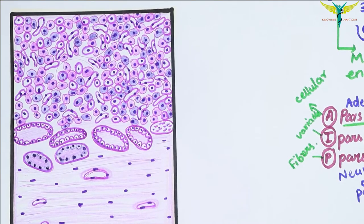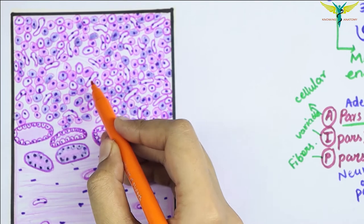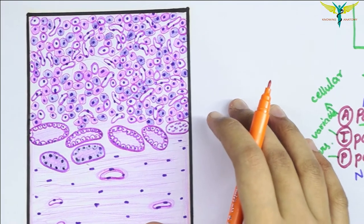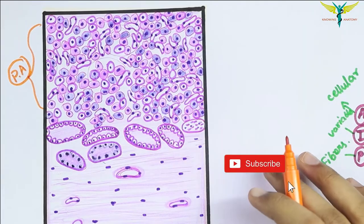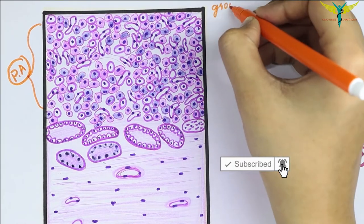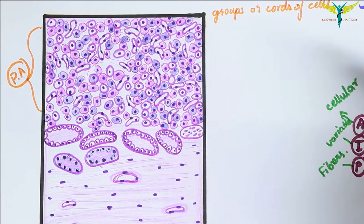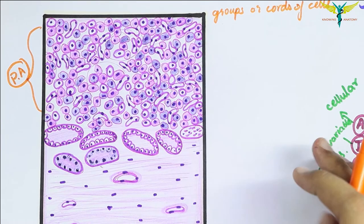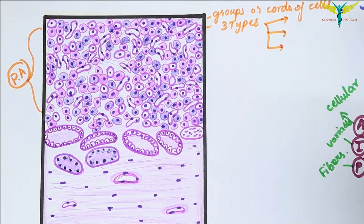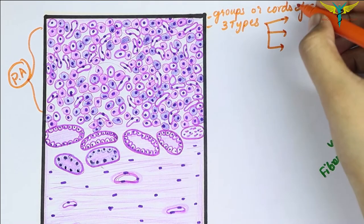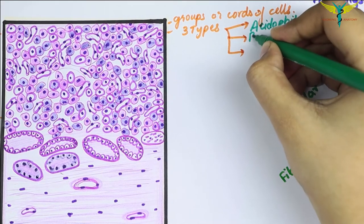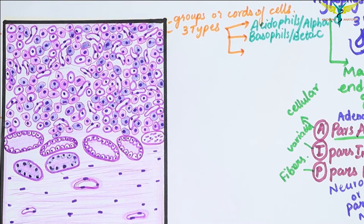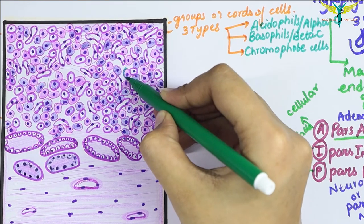The pars anterior consists of cords of cells that are separated by fenestrated sinusoids. Several types of cells responsible for different types of hormones are present in the pars anterior. The cells present in the pars anterior are of three types: the first type are called acidophils or alpha cells, the second type are called basophils or beta cells, and the third type are called chromophobe cells.